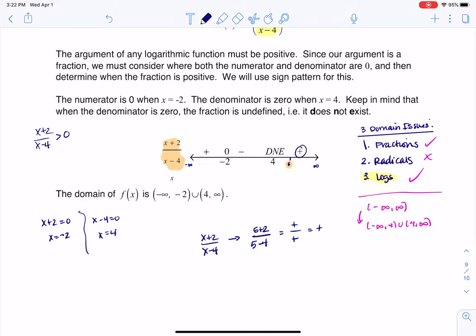This means any number I plug in to the right of 4—whether 6, 7, 100, or 90.5—when I plug it into this expression, it's positive. So my argument is positive when x is greater than 4. We know when I plugged in 5, I got a positive number.